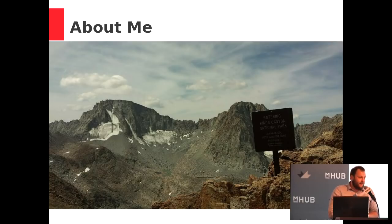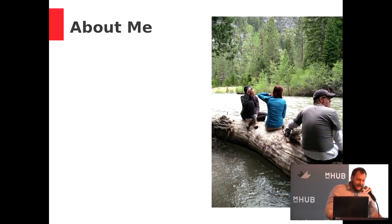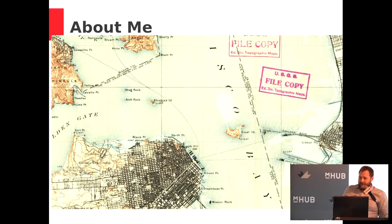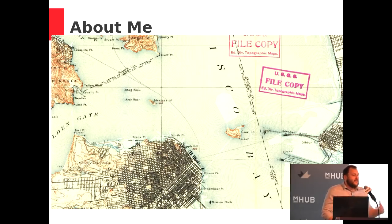I like to hike a lot. This is from the Sierra Crest, entering King's Canyon National Park. There are 20 named glaciers in California; one of them is in this picture — the Darwin glacier. Its size has shrunk from approximately covering the whole basin to just a small patch. I also like maps. This is a map of the San Francisco Bay Area overlaid on a map from about 150 years ago, showing the landfill introduced to the area since then.